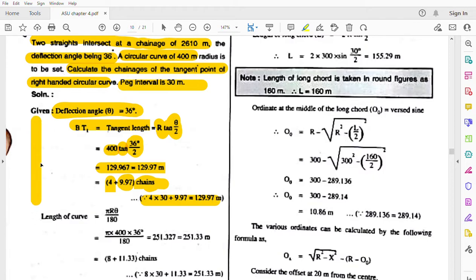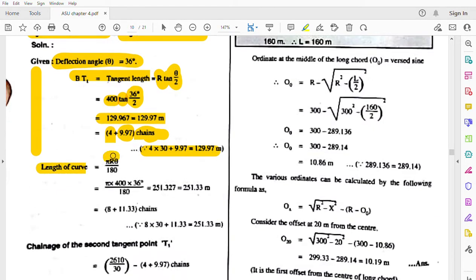Next is length of curve. Our formula is pi*R*theta/180. So pi*R is 400, theta is 36, upon 180. This is the length of curve: 251.33 meters.